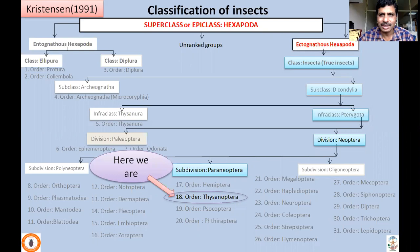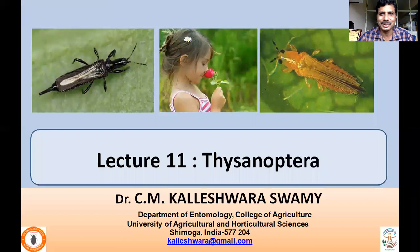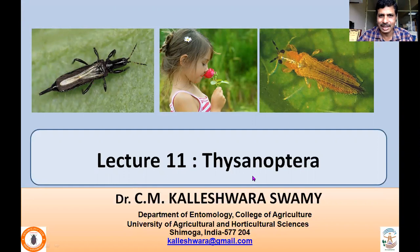Growing up, you might have tried to keep a flower near your nose to enjoy its fragrance, and your parents might have told you not to do that. Many insects like thrips, which are usually yellowish or blackish, may enter your nose. In this lecture number 11, I'll be dealing with Thysanoptera, commonly called thrips.